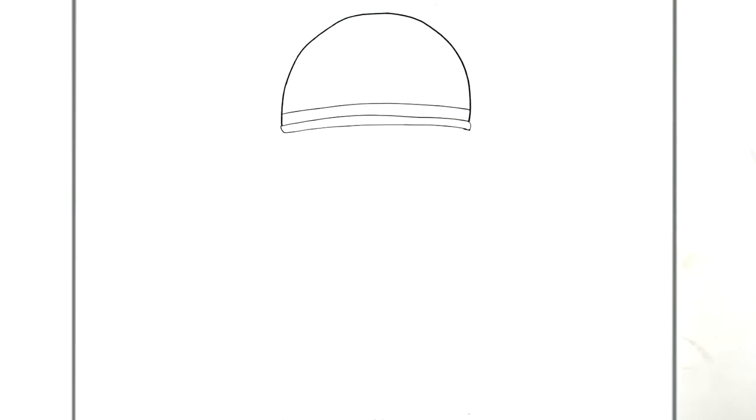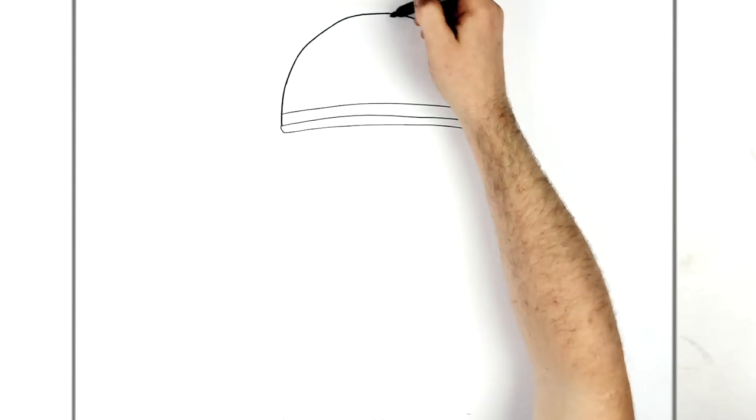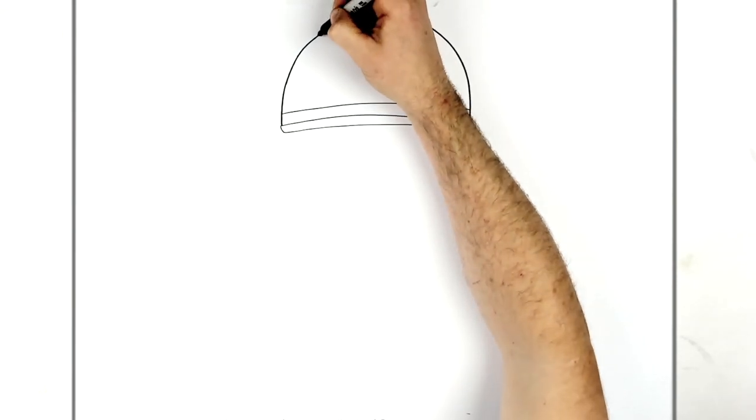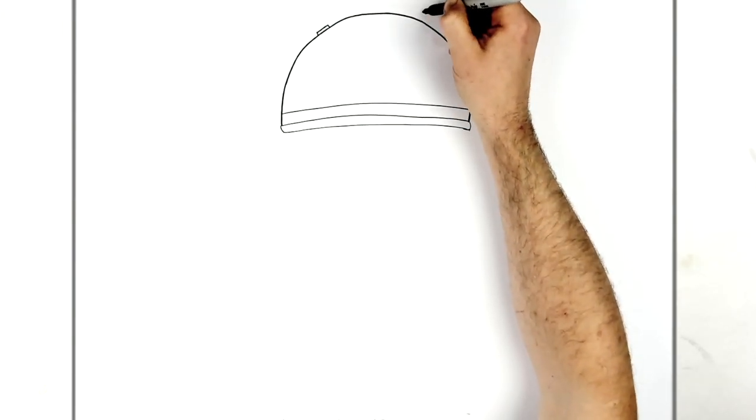And then we have another line on the inside that comes across like so. And they have these sort of lips or sort of boxes that kind of stick off the top there. One on the other side.